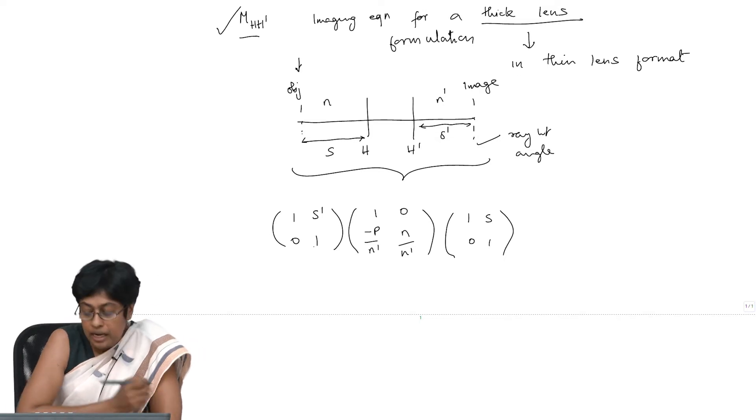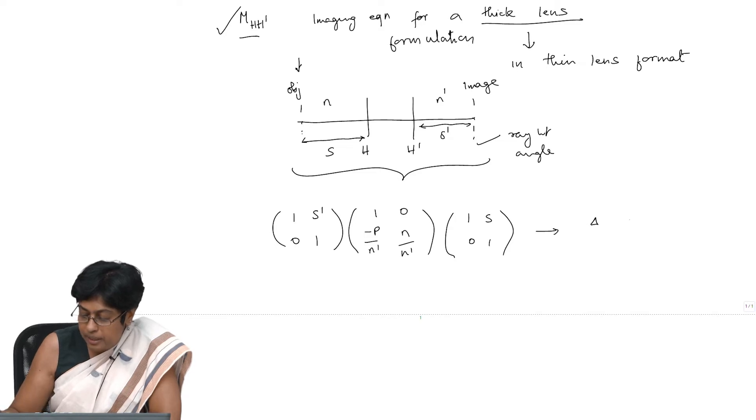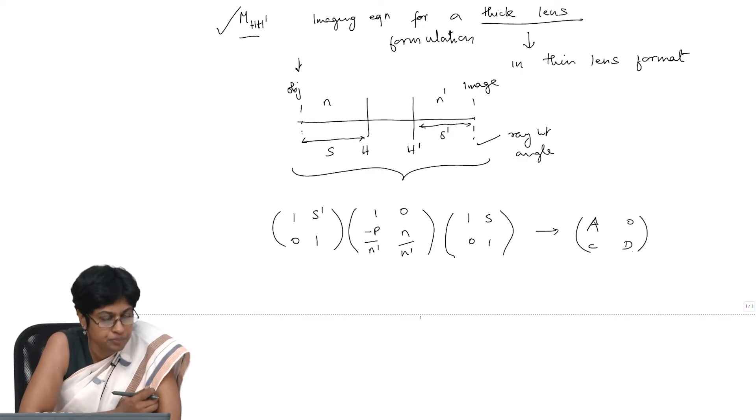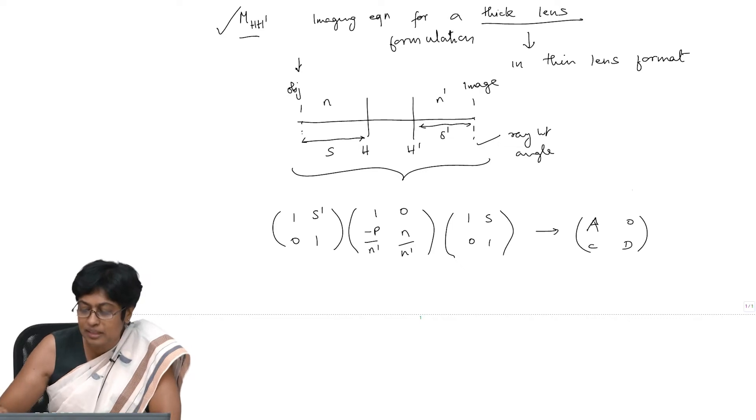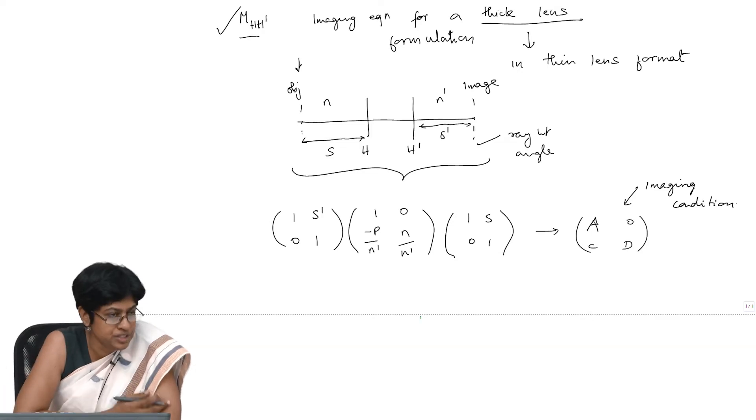We want this to translate to a matrix of this form. Why of this form? That means it is an imaging condition, right? Irrespective of the angle, everything from one point on the object goes to one point in the image. This is nothing but the imaging condition, and that is what we are trying to arrive at—the imaging condition for our general matrix.